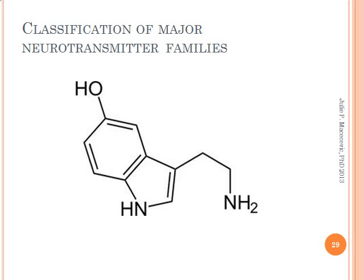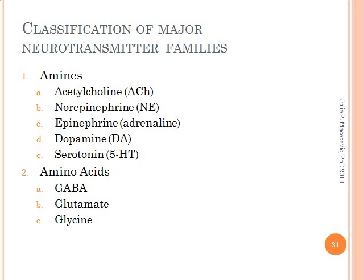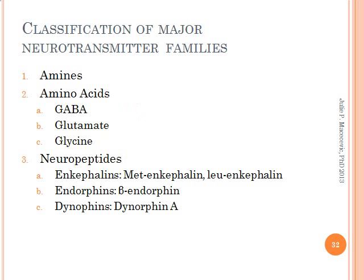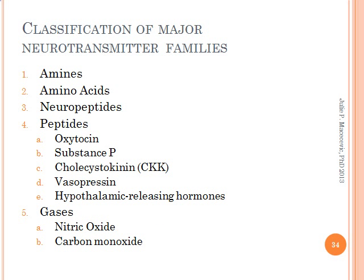There are different ways to classify neurotransmitters. One way is by breaking them into families based on their molecular makeup. The Amines family includes acetylcholine and the ever-popular catecholamines — norepinephrine, epinephrine, and dopamine — as well as the indolamines, including serotonin. The amino acids include gamma-aminobutyric acid (also known as GABA), glutamate, and glycine. The neuropeptides include the enkephalins, endorphins, and dynorphins. The peptides include oxytocin, substance P, cholecystokinin, vasopressin, and hypothalamic releasing hormones. Lastly, there are gases that act as neurotransmitters, including nitric oxide and carbon monoxide.